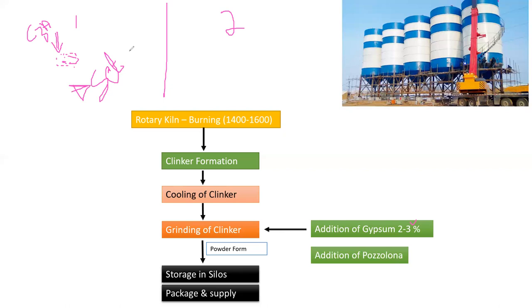In order to delay that setting, we need to add something. That something we add in order to delay the setting is called gypsum.